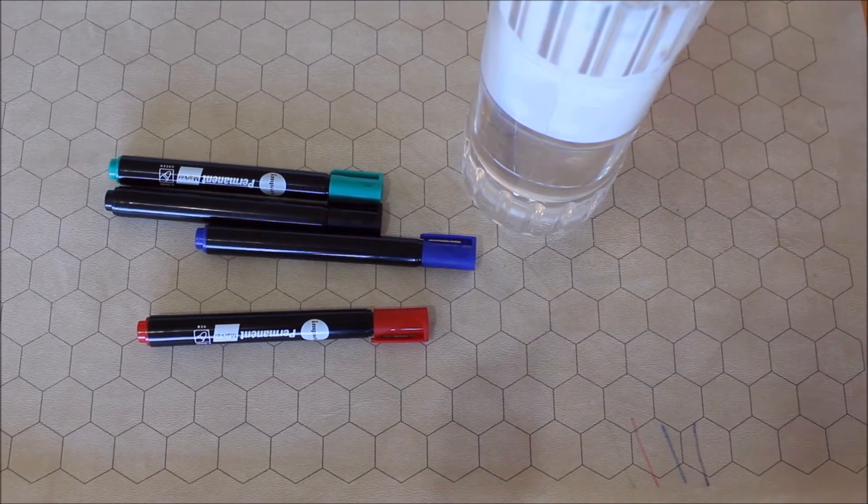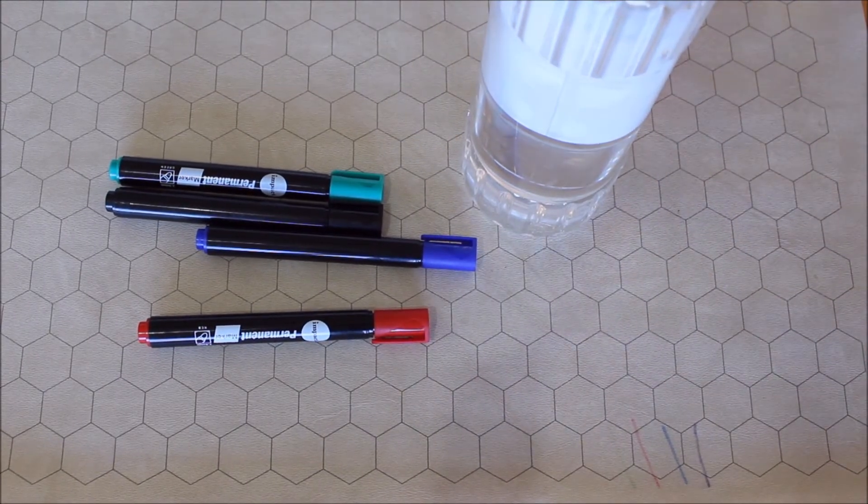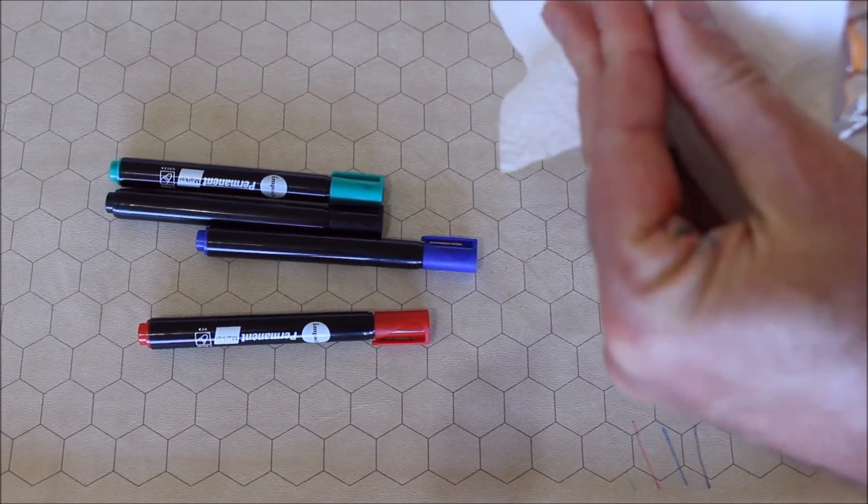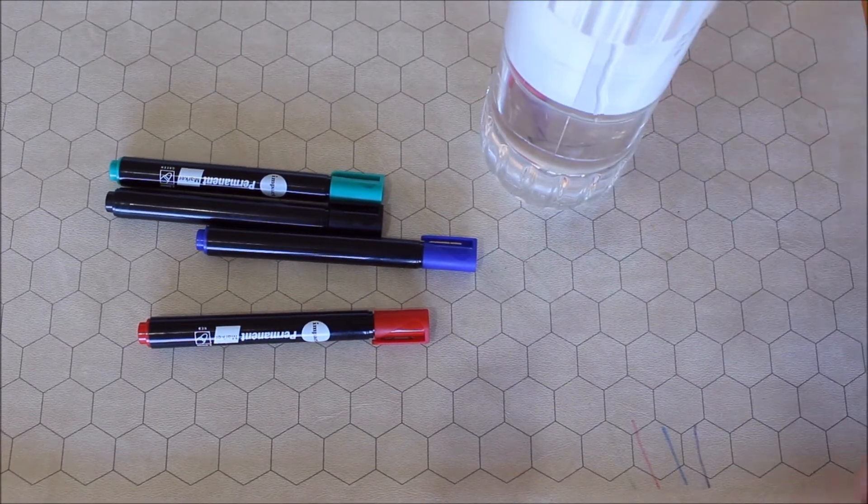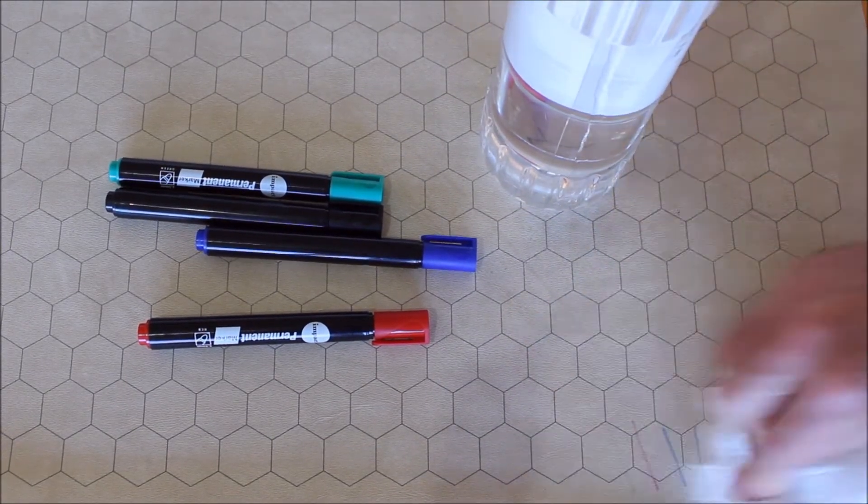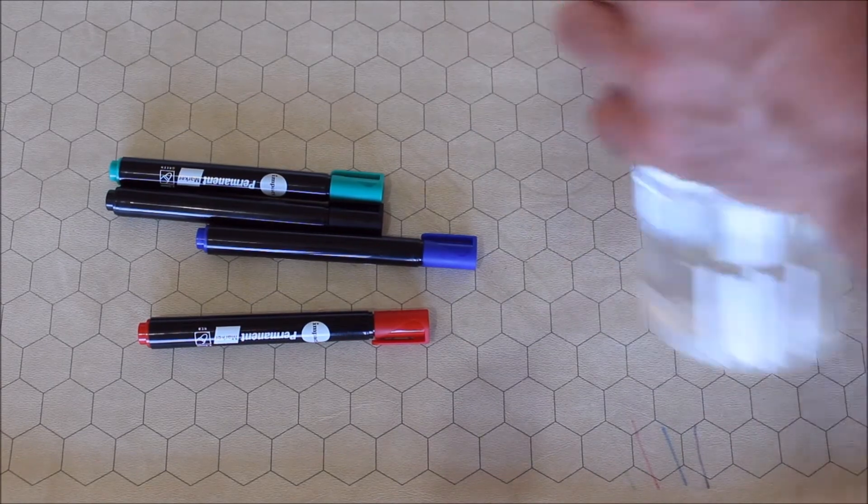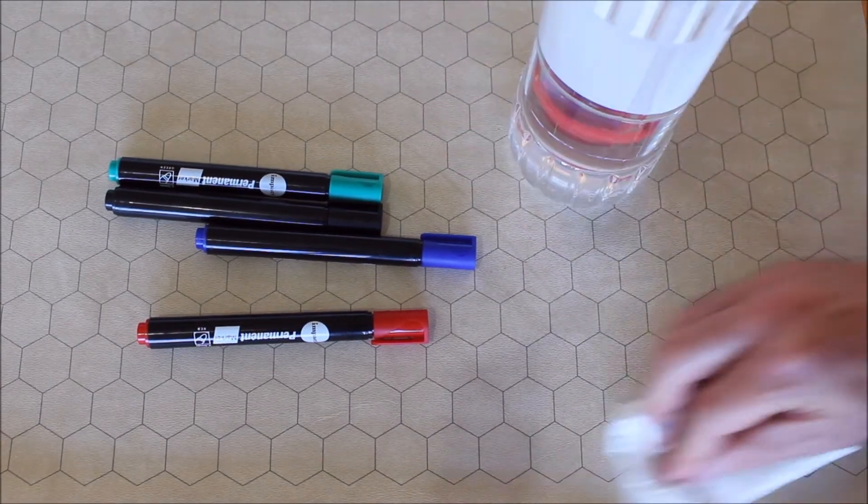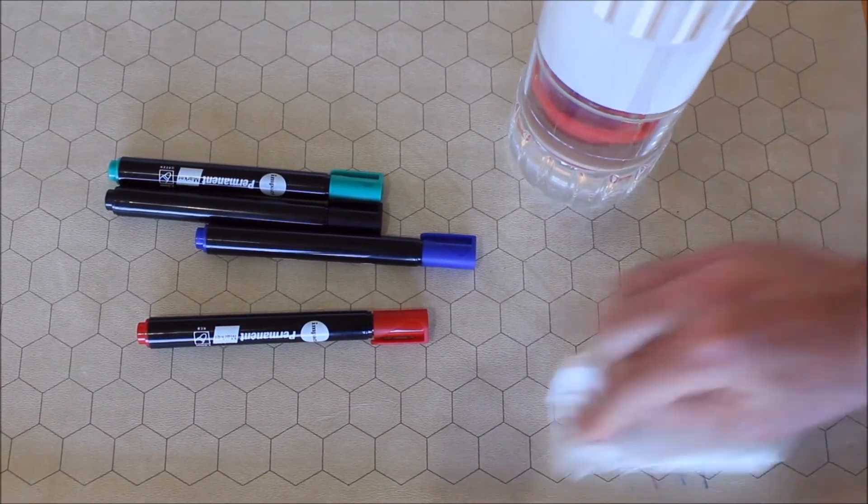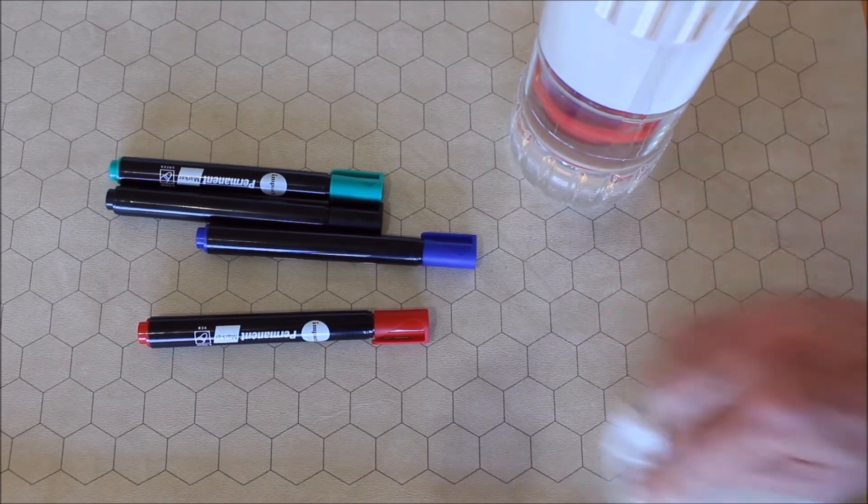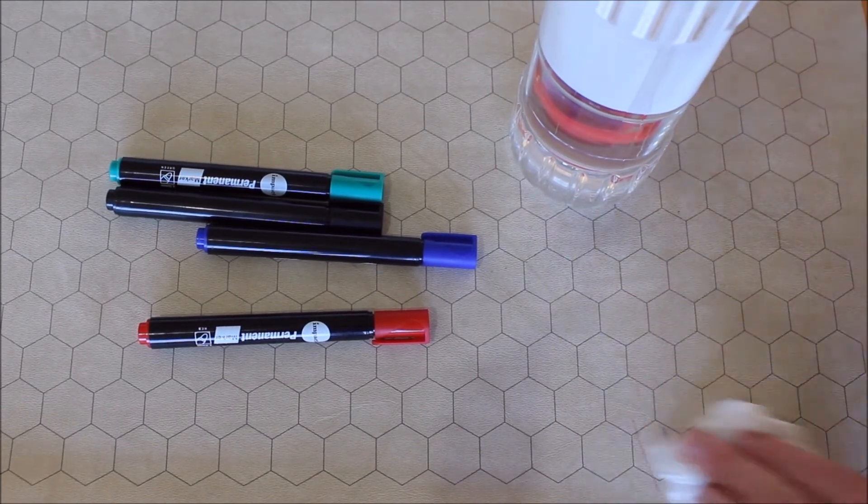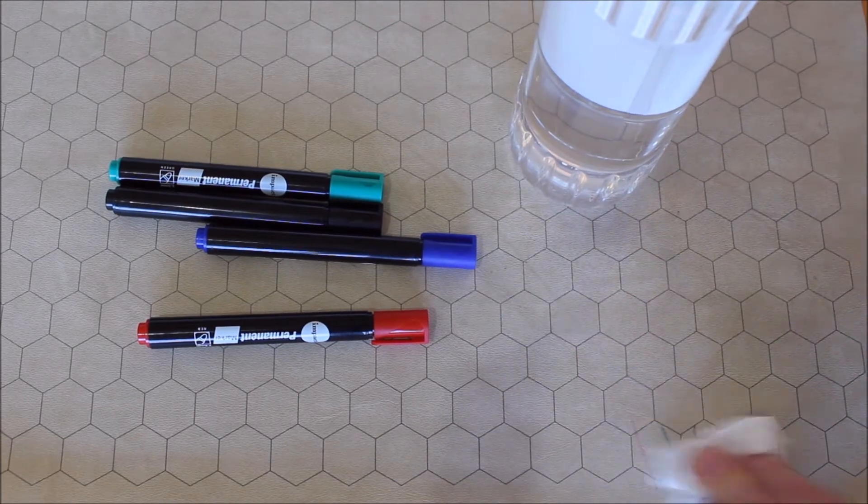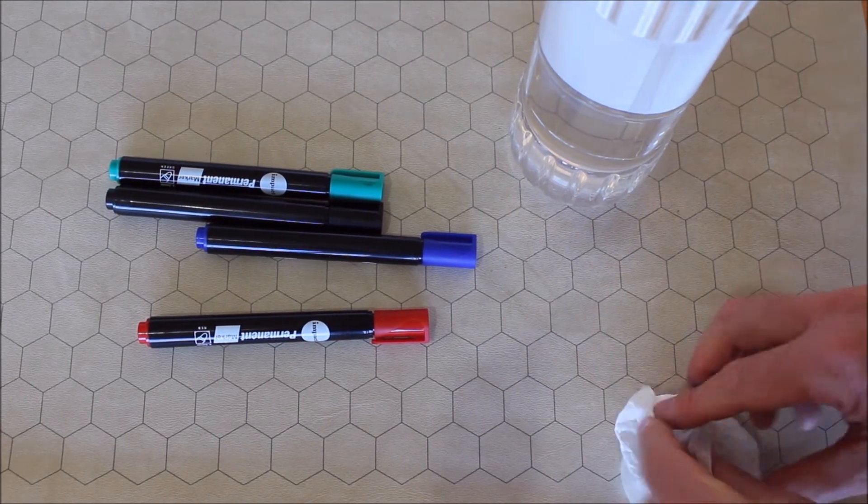Well that certainly had an effect. Let's get rid of that though. More mineral turpentine. Rubbity rubbity rub. Oh the green is definitely disappearing. The black, and the blue, and the red, still pretty much intact. But that green is definitely coming out. Isn't that helpful? Yeah I think it is.